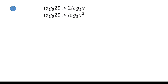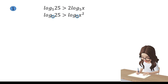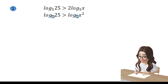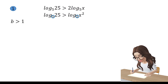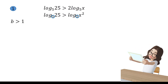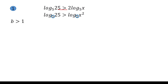Nothing changes on the left side. Next, identify the base: our base is 5, and since 5 is greater than 1, the inequality symbol will remain throughout this example. Through the property of equality for logarithmic equations, the inequality now becomes 25 > x².